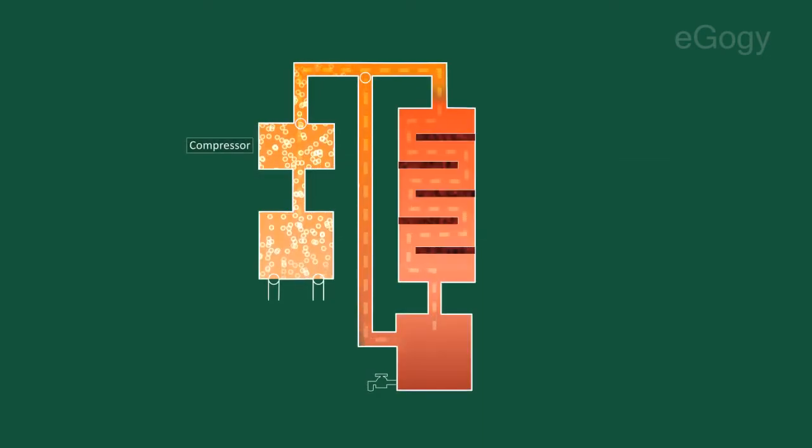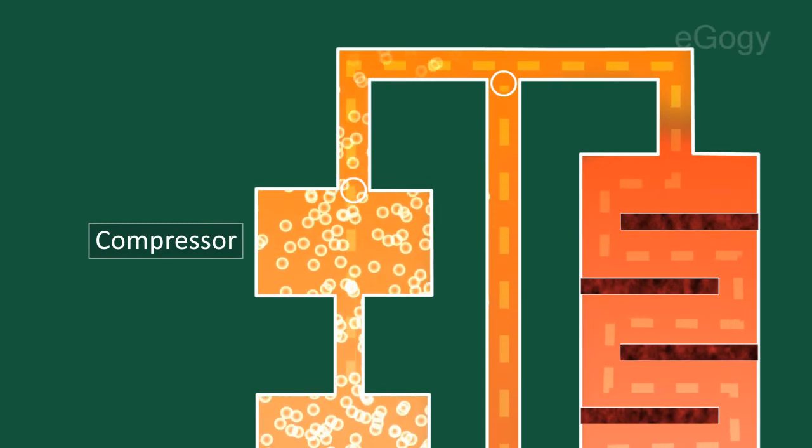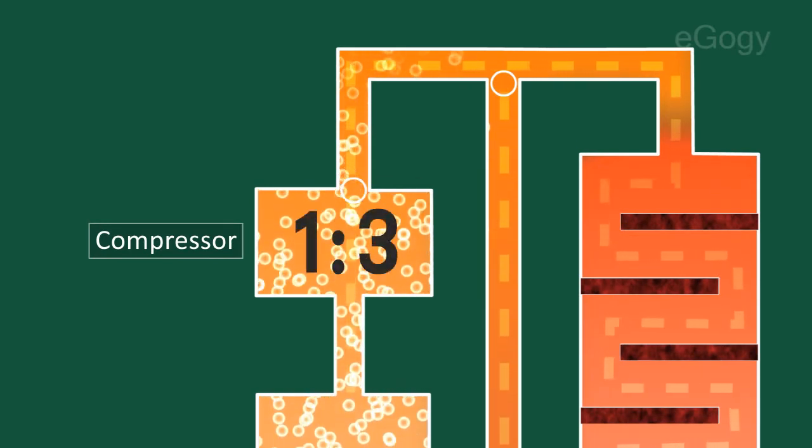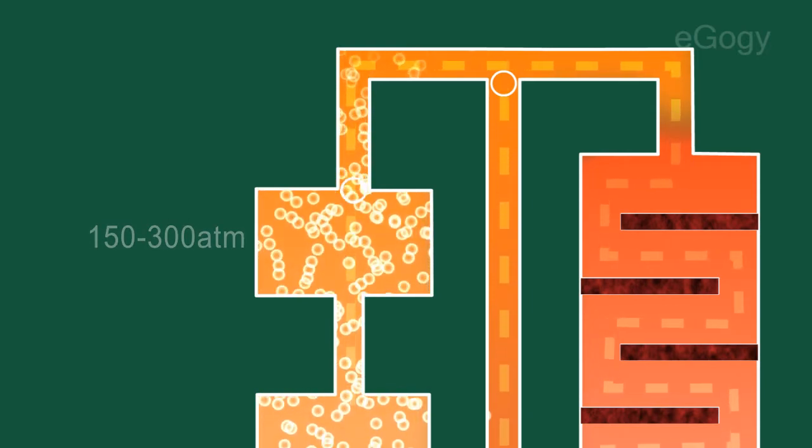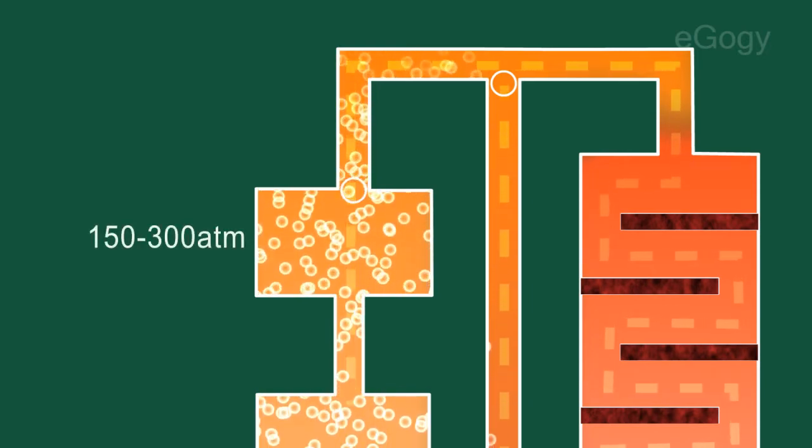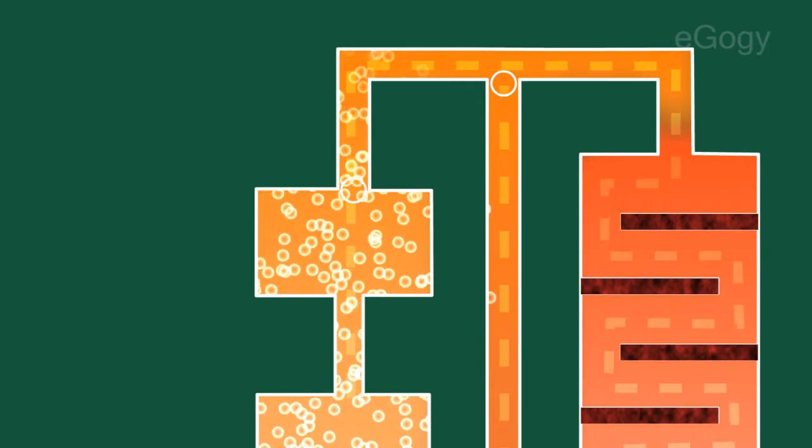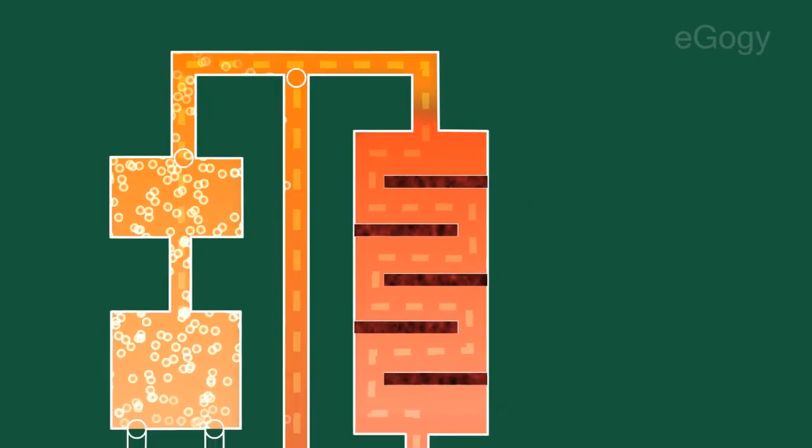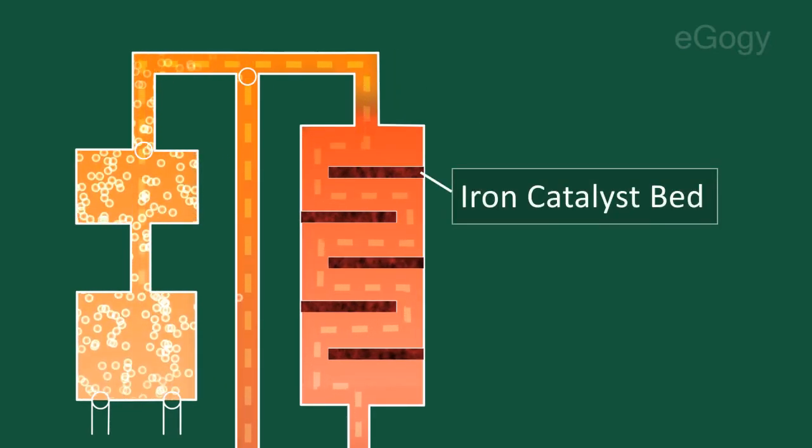The mixture of nitrogen and hydrogen going into the reactor is in the ratio of 1 to 3. The gases are pressurized to about 150 to 300 atmospheres inside the compressor. The pressurized gases are pumped into a tank containing bits of iron catalyst.